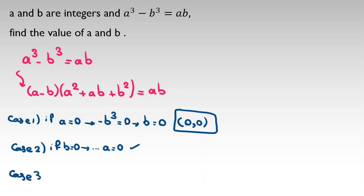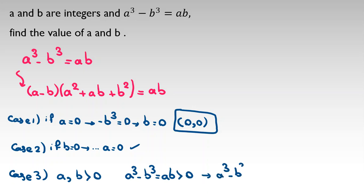Case 3: suppose both a and b are positive. We know a cubed minus b cubed equals ab. Because a and b are positive, ab is positive, so a cubed minus b cubed is greater than 0, meaning a cubed is greater than b cubed, and we conclude a is greater than b.